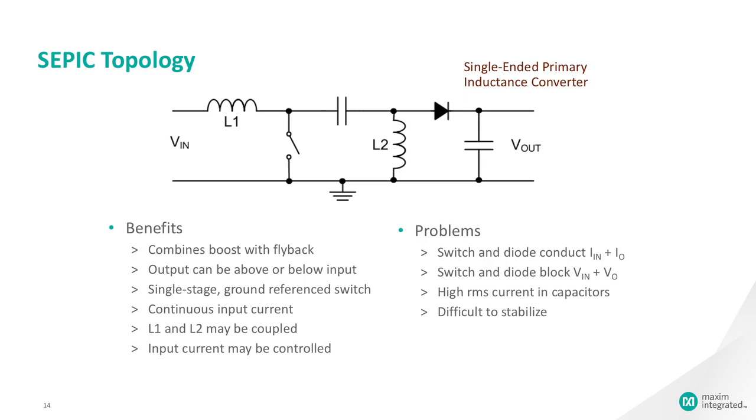A SEPIC is essentially a boost converter followed by a buck-boost converter. Therefore, it is similar to a traditional buck-boost converter, but this topology has the advantage of having a non-inverted output. In other words, the output is the same voltage polarity as the input.